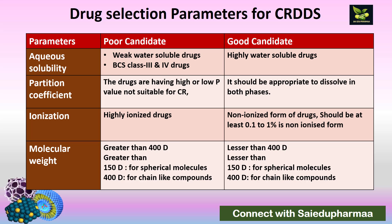Molecular weight or molecular size should be less than 400 Dalton for a good candidate drug. If the size is more than 400 Dalton, we cannot prepare a controlled release delivery system because it will be very large. For spherical molecules, the drug should be less than 150 Dalton, and for chain-like compounds it should be less than 400 Dalton.